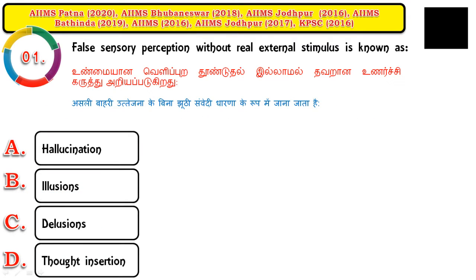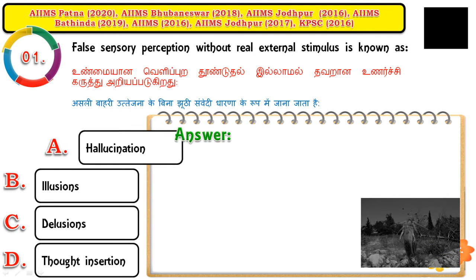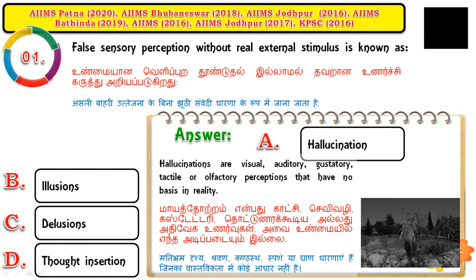Question number one: false sensory perception without real external stimulus is known as hallucination. Hallucination is one of the major symptoms in psychiatric conditions. The patient will see or feel senses in the form of visual, auditory, gustatory, tactile, or olfactory experiences — things that cannot be perceived by a normal person.